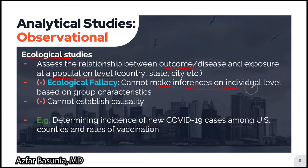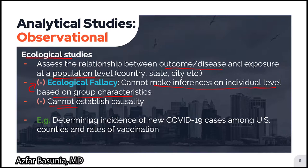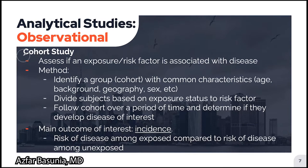Making inferences on an individual patient level based on the group characteristics studied in an ecological study is incorrect. This is known as an ecological fallacy, and this is high yield to remember. Much like descriptive studies and cross-sectional studies, ecological studies cannot be used to establish causality. An example of an ecological study can include determining the incidence of new COVID-19 cases among US counties and the rates of vaccination among those counties.